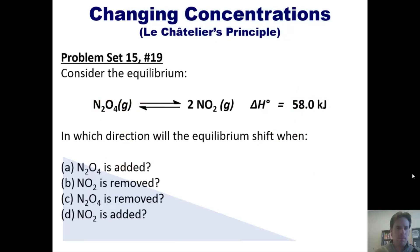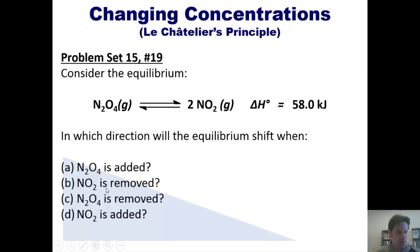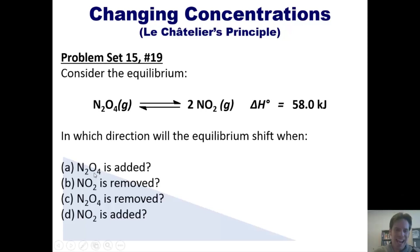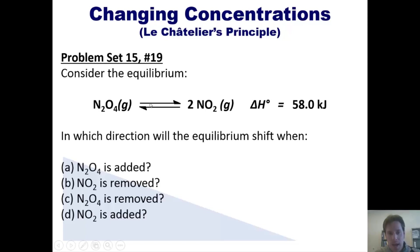Consider the equilibrium between N2O4 and NO2. In which direction will the equilibrium shift if N2O4 is added, if NO2 is removed, if N2O4 is removed, and if NO2 is added? If N2O4 is added, the left side is heavy. To restore balance, the equilibrium will shift to the right, removing N2O4 by converting it to NO2.